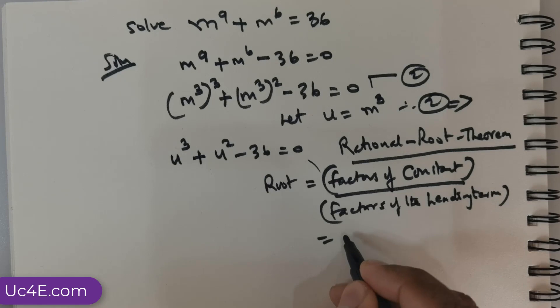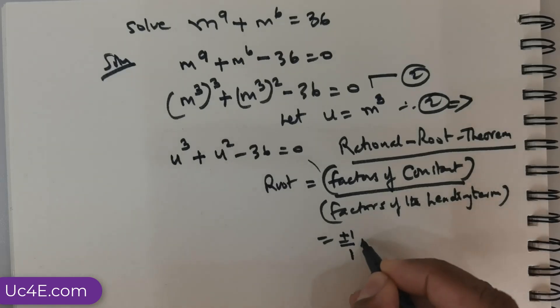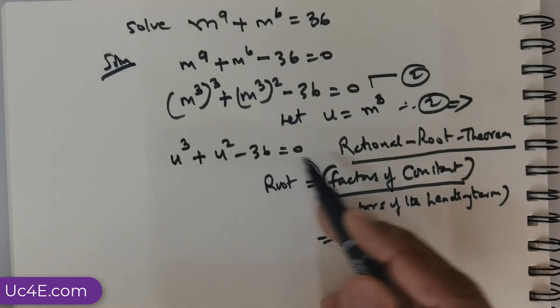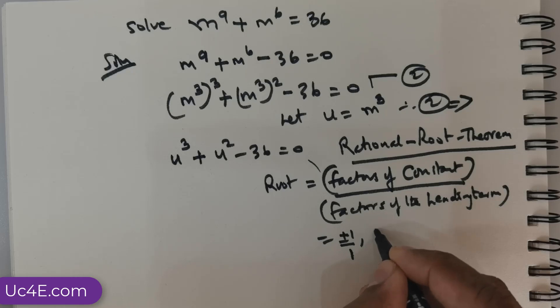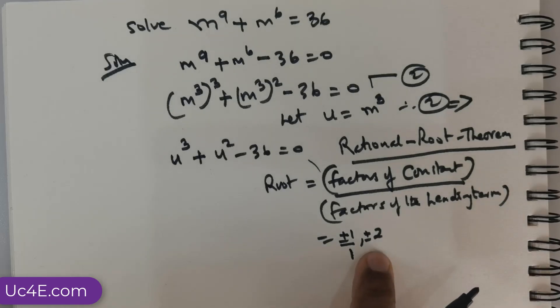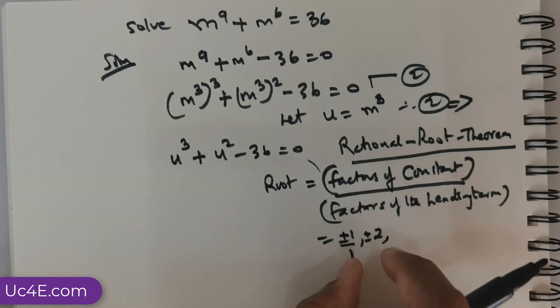But in this case, the factors of the constant is going to be, I am going to start with 1, plus 1, divided by the factors of the leading term. It is always going to be 1. So, in this case, it is going to be plus 1 or minus 1. So, I can state it like this, plus or minus, followed by the factors of 36 can also be 2, right? So, plus or minus 2. The denominator, there is no point in writing the factors of the denominator because it is always going to be 1. So, that is the reason I am just dropping that.